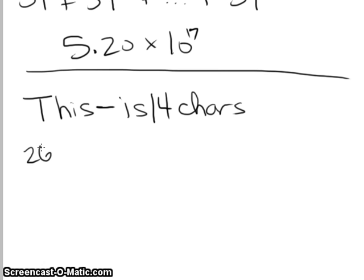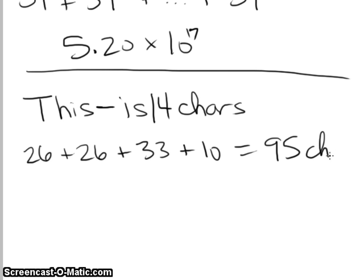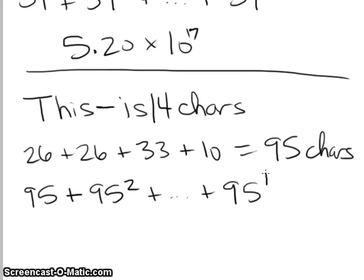The search space, we've got 26 uppercase, 26 lowercase, 33 symbols, and 10 digits. That's a total of 95 characters for each position. And passwords of length 1 have 95 possibilities. Passwords of length 2, they're 95 times 95, or 95 squared, and so on up to 95 to the 14.